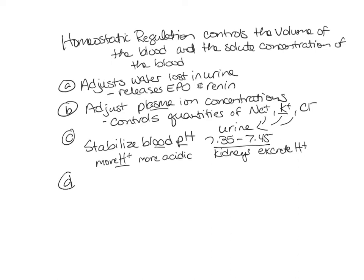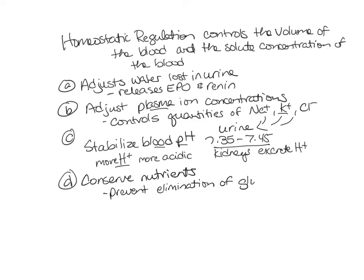Next, the kidneys conserve valuable nutrients. That means they prevent excretion and elimination of valuable nutrients such as glucose and amino acids. They make sure that glucose and amino acids don't end up in the urine, and instead they get reabsorbed back into the body. The last homeostatic regulatory mechanism is that the kidneys assist the liver in detoxifying poisons.